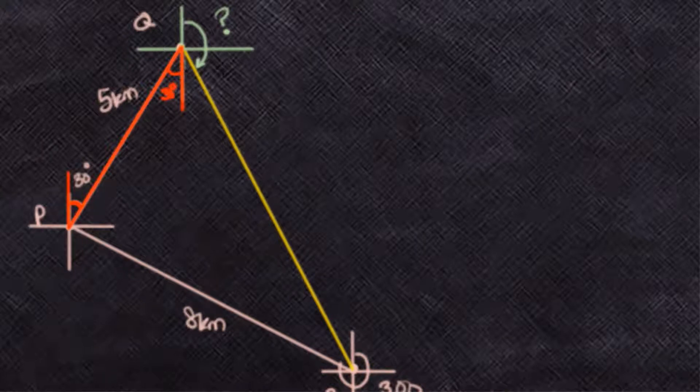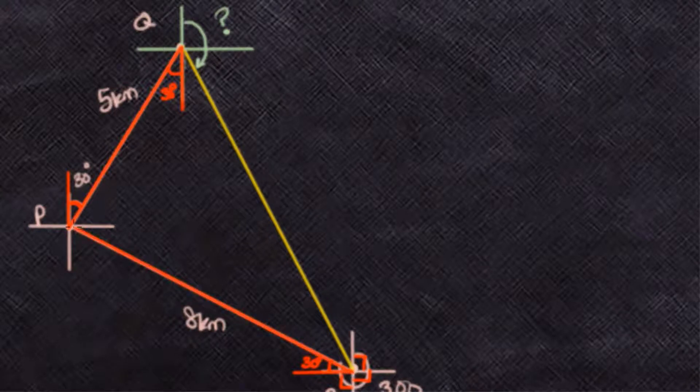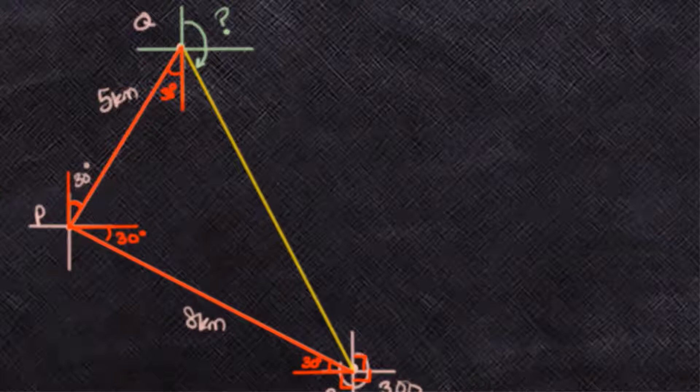We are given the bearing of Q from P. At point Q we have 300 degrees; 300 minus 270 is 30 degrees, so this angle is also 30. We also consider the alternate angle at point P; that 30 degrees will also be equal to this 30 degrees because they are alternate angles.